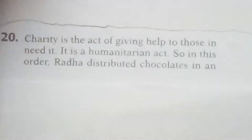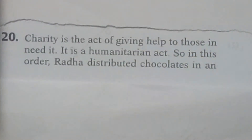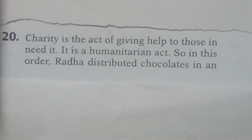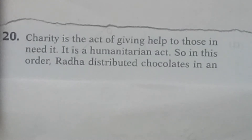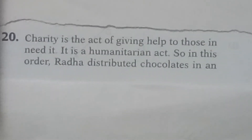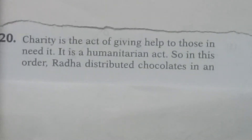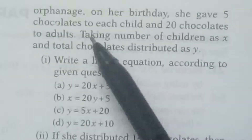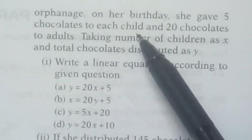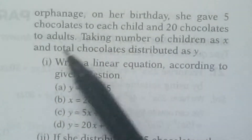This is a case study question from the chapter on linear equations. It is given that charity is an act of giving help to those in need — a humanitarian act. So in this story, she distributed chocolates in an orphanage on her birthday. She gave 5 chocolates to each child and 20 chocolates to adults.